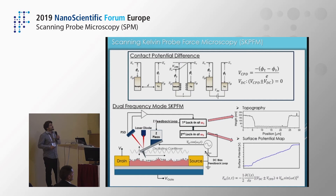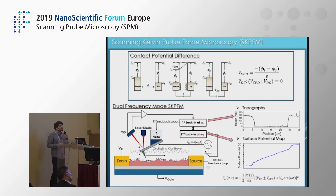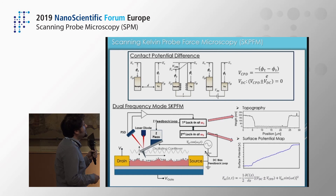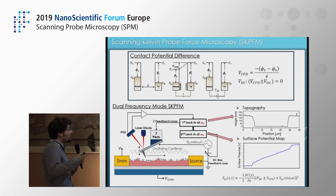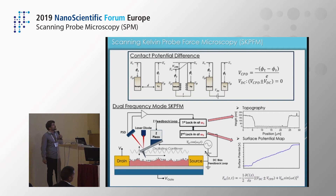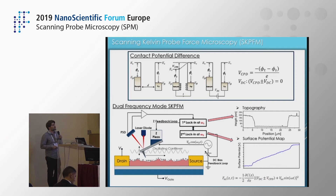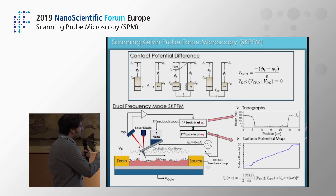Let me briefly recap how Kelvin probe works. It is based on the estimation of the contact potential difference: a conductive tip approaches the sample, the work functions of the two differ, and a contact potential difference V_CPD builds up. Kelvin probe simply applies an external V_DC bias to restore equilibrium between the two. This is done point-wise, so we can map the contact potential difference all over the sample. In our case we perform the so-called dual-frequency mode Kelvin probe, meaning we retrieve topography and surface potential map simultaneously with a single raster over the same spot. It is a non-contact AFM-related technique.